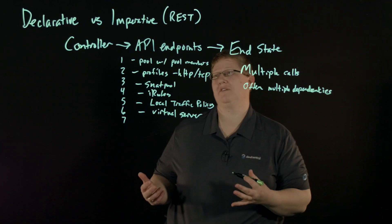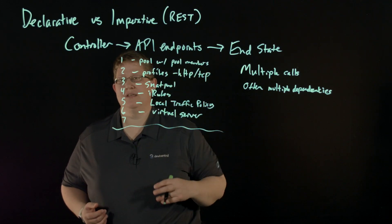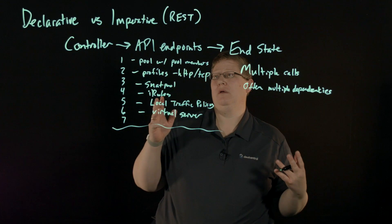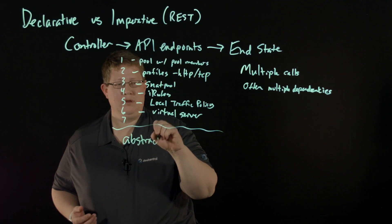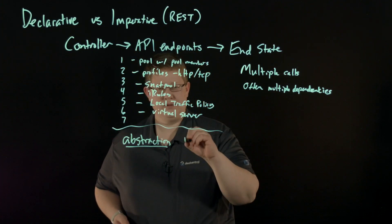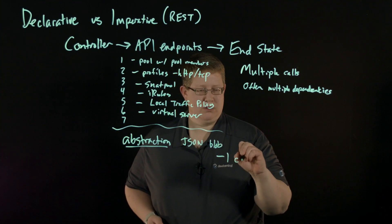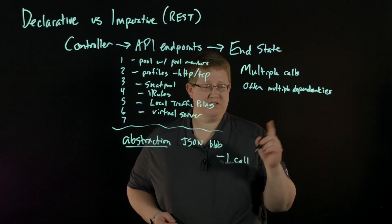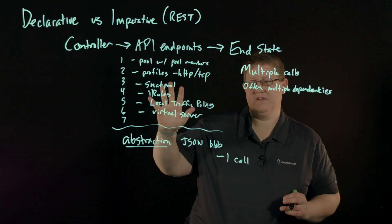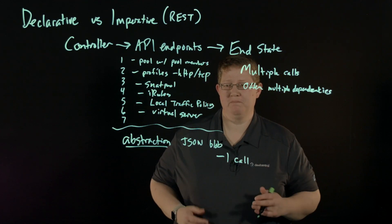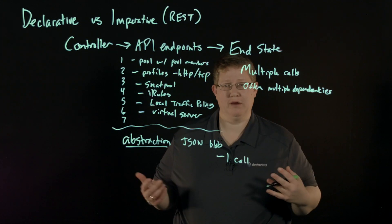Versus when you go to a declarative model, all of this work is done for you. Somebody has to do the imperative work, but what the declarative model gives you is abstraction. You give it the data in a JSON blob and you send one call — one call to the API. You send all the JSON data that describes all of these things, and then the system builds it for you. The system knowledge is abstracted, it's a single API call, and dependencies are all handled for you.